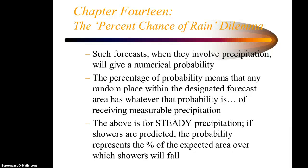Whenever the percentage is issued, unless it's designated, it's for steady precipitation. If showers are predicted, that probability represents a percentage of the expected area over which showers will fall. So if the percentages are low, that means the forecaster has a fairly low confidence that the precipitation expected to fall will actually be measurable. If the probability is high, there's a greater confidence it will be measurable. So if they said 20% chance of showers, that meant only 20% of the area would be covered by showers, but you happen to be under that cloud. You have to really know what they mean when they say chance of.